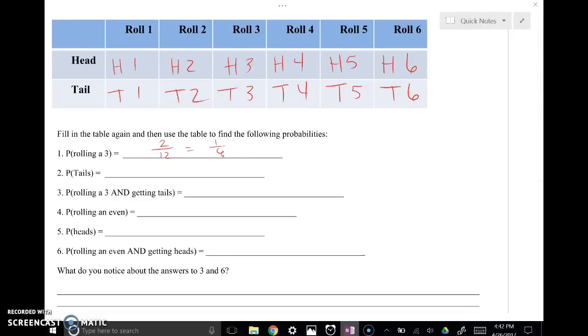Okay, how about the probability of tails? Well, there are 6 options in our total outcomes that have tails in them. So that would be 6 out of the total 12, or 1 half. So what's the probability you have an outcome with tails? 1 half.